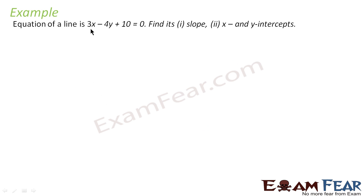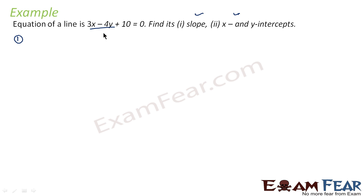We have been told that we have the equation of line 3x minus 4y plus 10 is equal to 0, and we need to find its slope and x and y intercept. If we can just convert this equation into slope form — the first case I am taking — we will get the slope. To convert the equation into slope form, we use y = mx + c form.